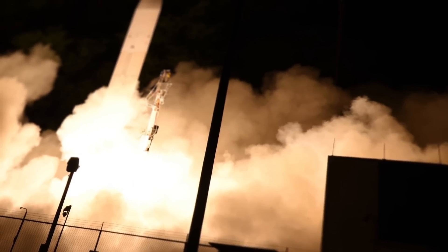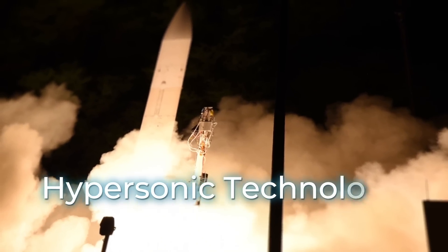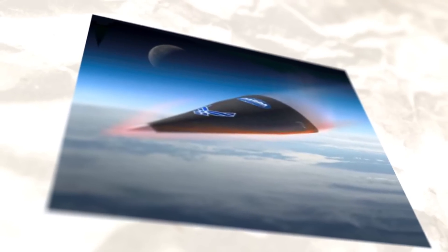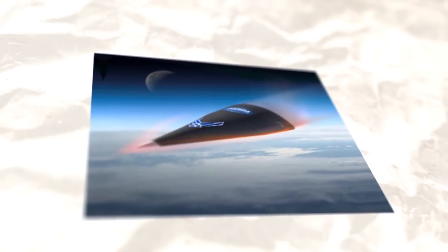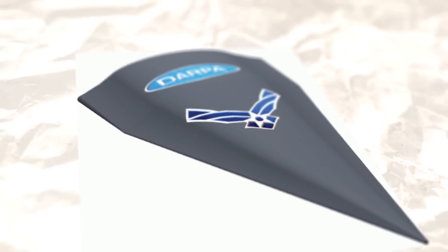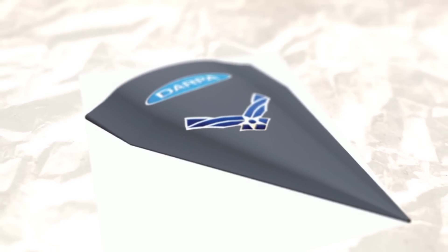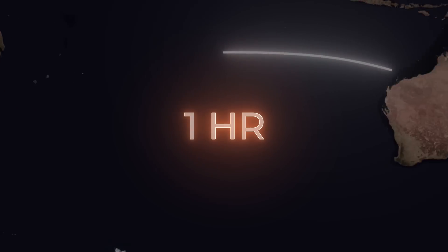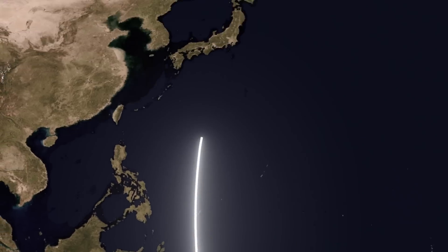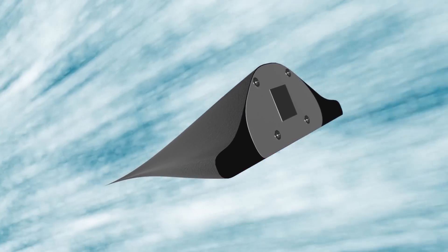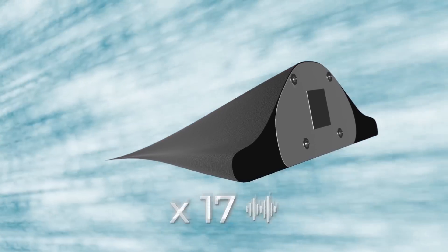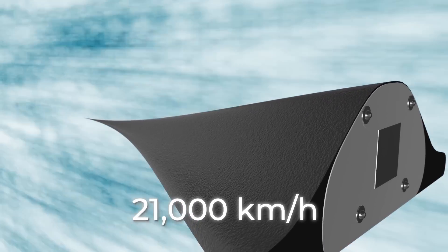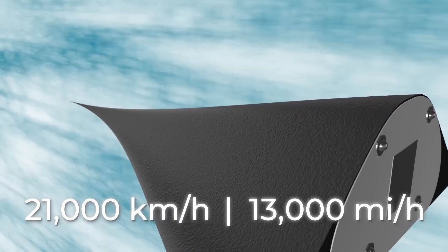I rightfully give the third place to Hypersonic Technology Vehicle 2, or HTV-2 for short. It was planned that with the help of data on the aerodynamics of this aircraft, it would be possible to create a special strike aircraft. A plane that could reach any destination in the world in just one hour. And no traffic jams. This hypersonic glider was more than 17 times faster than the speed of sound and could accelerate up to 21,000 km per hour. That's up to 13,000 miles per hour.